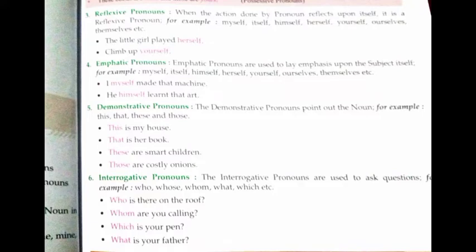Reflexive pronoun को example से समझते हैं: 'The little girl played herself' — छोटी लड़की खुद से ही खेली। Little girl noun है, वो खेल रही है, और उसका reflection उसी पर पड़ रहा है क्योंकि वो अकेले ही खेल रही है। इसलिए 'herself' use हुआ। दूसरी example: 'Climb up yourself' — खुद ही चढ़ो। जैसे कोई escalator पर खुद से चढ़े, तो 'yourself' use करेंगे।